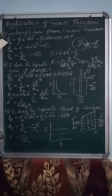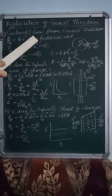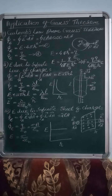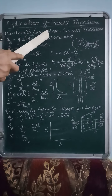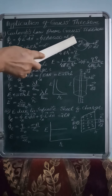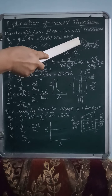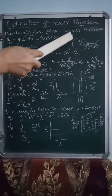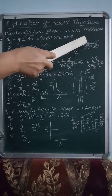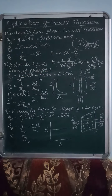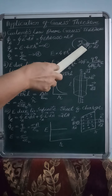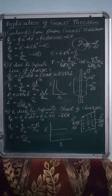We know Φ_E = ∫E·dA = ∫E dA cosθ. To prove this, we are considering a positive point charge +Q at the point O. We have taken a spherical Gaussian surface on which we have taken a point P having area dA. The radius of the Gaussian surface is R.